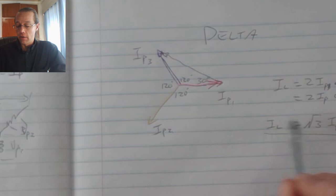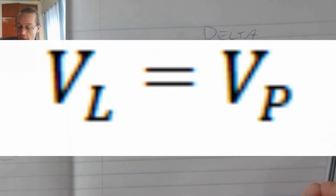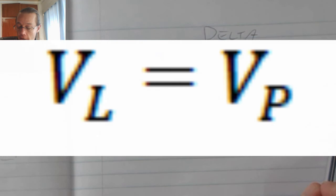In my delta system, there is an increase in my line current with comparison to my phase current, and we also find that my line voltage is equal to my phase voltage in the delta configuration.